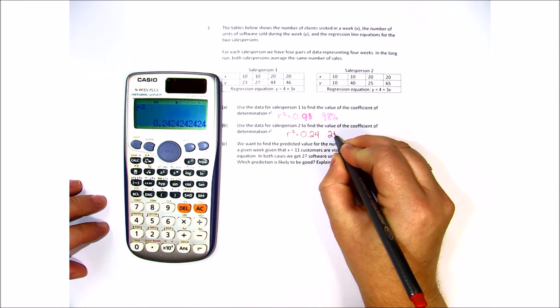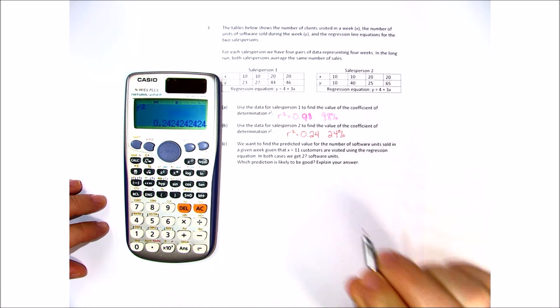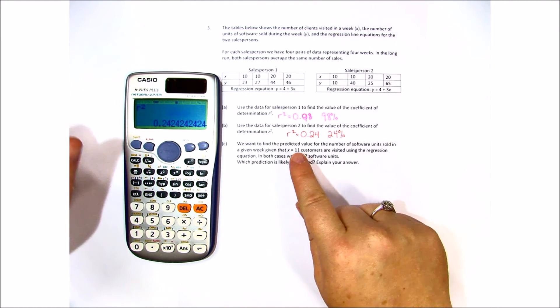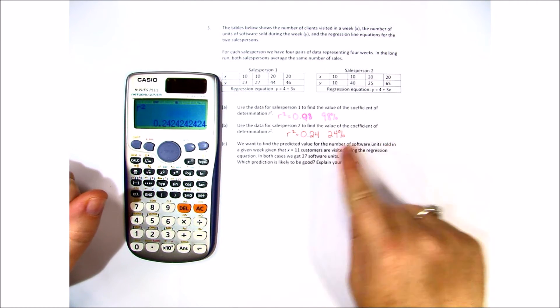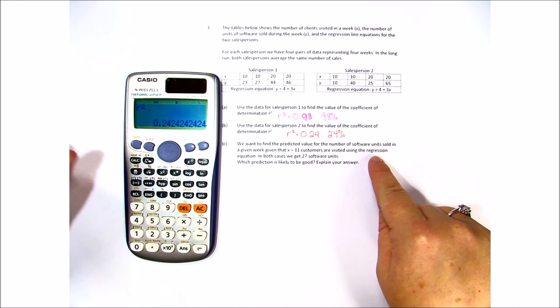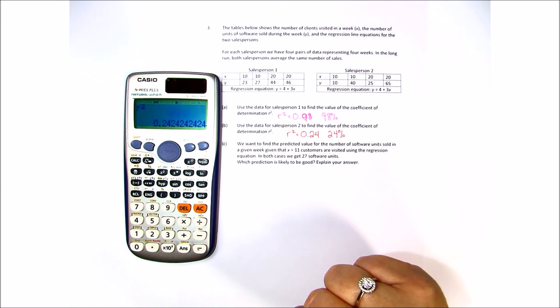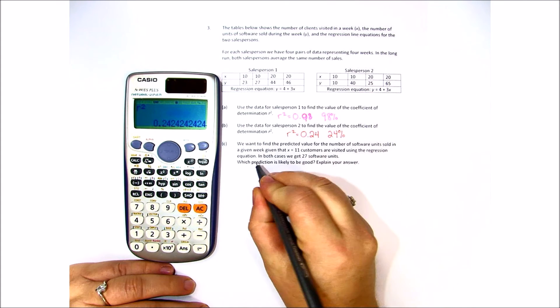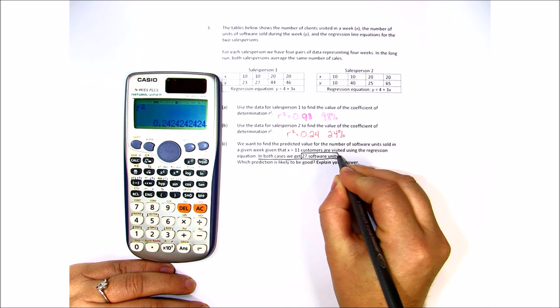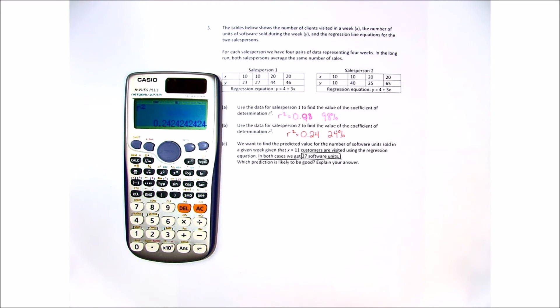In other words we can depend on that regression equation about 24% of the time to be correct. We want to find the predicted value for the number of software units sold in a given week given that x equals 11 customers are visited using the regression equation. Now they actually tell us in both cases we get 27 units. So we actually know the answer to the regression equation.